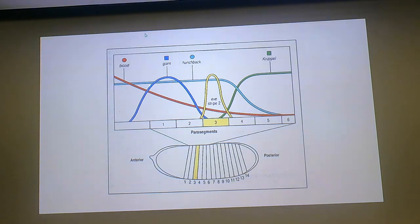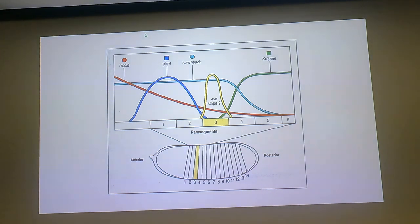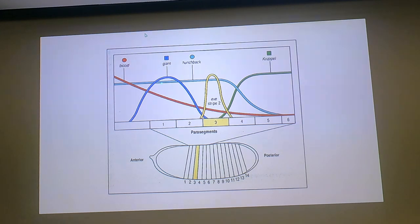We also see giant—that's a gap gene—and another gap gene, hunchback, and there's Krüppel. Just looking at the concentrations of these genes suggests a model that Eve's regulatory regions are turned on by hunchback and bicoid, and they're turned off by giant and Krüppel. And that's how you get this nice sharp stripe.